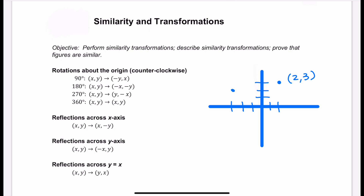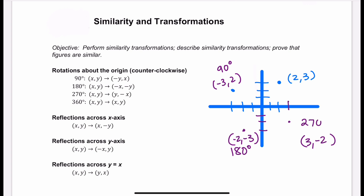That gives us a 90 degree counterclockwise rotation. If I flipped it completely upside down, I would have negative x, negative y, which would give me the point negative 2, negative 3 — that's a 180 degree rotation. Whereas negative 3, 2 gives a 90 degree rotation. Now 270 degrees would be y, negative x, which would be 3, negative 2 — a 270 degree rotation.